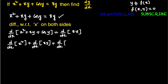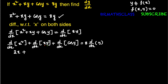On the left-hand side, we differentiate each and every term: d/dx of x² plus d/dx of xy plus d/dx of cos y, equal to the right-hand side. d/dx of ku is k into derivative of u, so d/dx of 8y is 8 into d/dx of y. Derivative of x² is 2x. For d/dx of xy, I use the product rule: first function into derivative of second function, plus second function into derivative of first function.